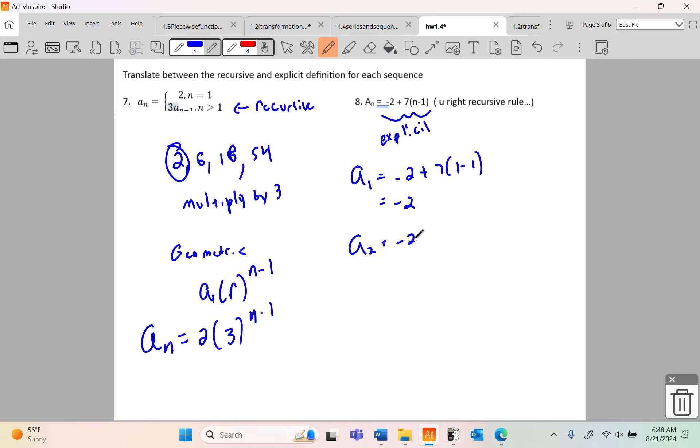A sub 2 is going to be negative 2 plus 7 times 2 minus 1. And 2 minus 1 is 1 times 7 is 7. It's going to be 5. I'm willing to bet the next term is going to be 12. A sub 3 is negative 2 plus 7 times 3 minus 1. 3 minus 1 is 2 times 7 is 14. Taking away 2 is 12. So here's my numbers: negative 2, 5, 12. And what you should see is we are adding 7.